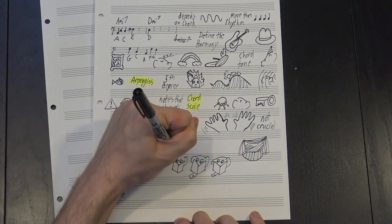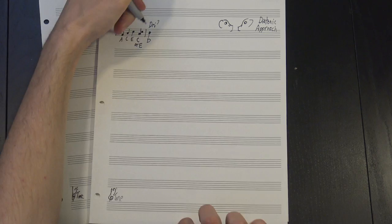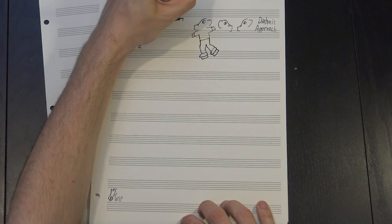The first is what's called a diatonic approach. Here we use one of the notes next to it in the key. In this case, we're trying to go to a D, so we'd approach it from either a C or an E. This technique lets us smoothly step into the chord, and it's pretty common, but it wouldn't be jazz if we always did the easy thing.